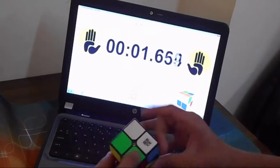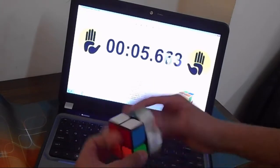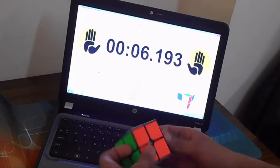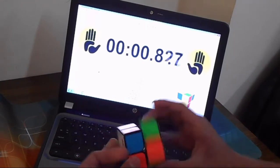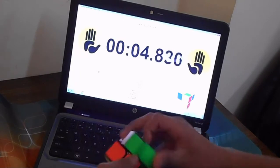Out of the box, this cube was very scratchy and slow. The tensions were also uneven and the cube could barely cut 45 degrees. Uneven tensions resulted in a lot of catches and there was also corner twisting issues.